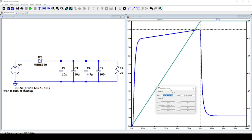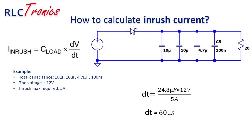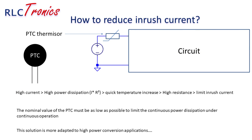We already discovered the first method to reduce inrush current. You can also take a second look at your capacitors and check if you really need those values — reducing the total capacitance results in a reduction of inrush current. There is also another way, which consists of adding a PTC in series with the voltage generator. When a high current goes through it, its temperature will increase and its resistance will increase as a consequence, resulting in a reduction of inrush current.